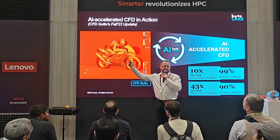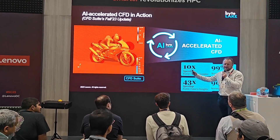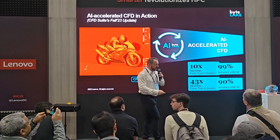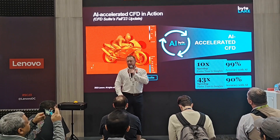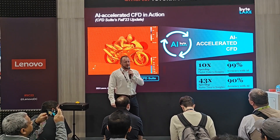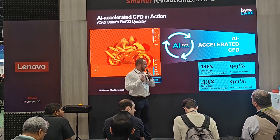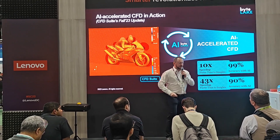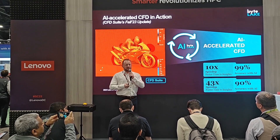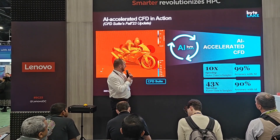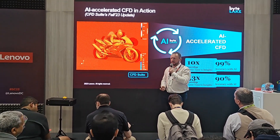With that, we managed to accelerate the simulation. This is a simple motorbike steady simulation from OpenFOAM, and we accelerated that simulation by 10x keeping accuracy at 99%. Our latest release, called Learning on the Fly, adds additional AI models and gives you a speedup of 43 times, with accuracy dropping to 90%, which in many cases is very acceptable.